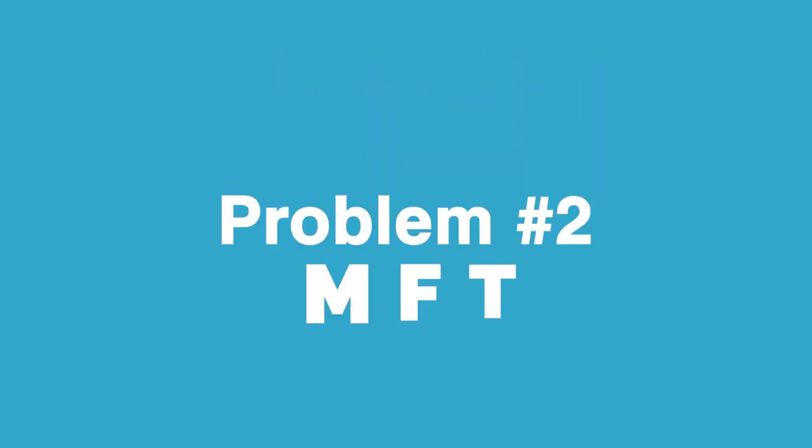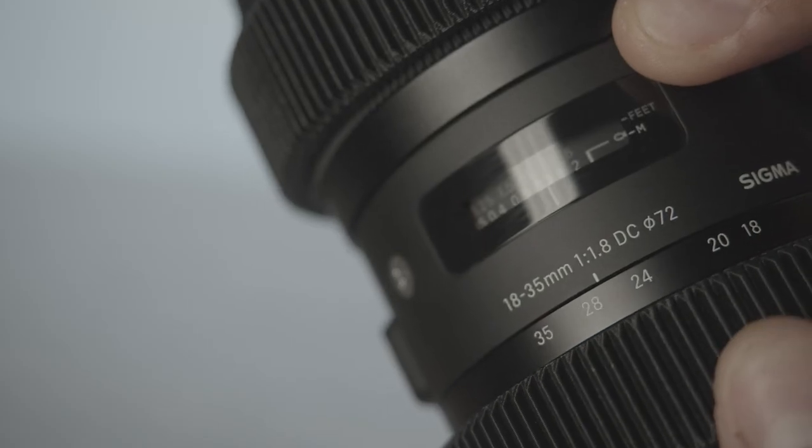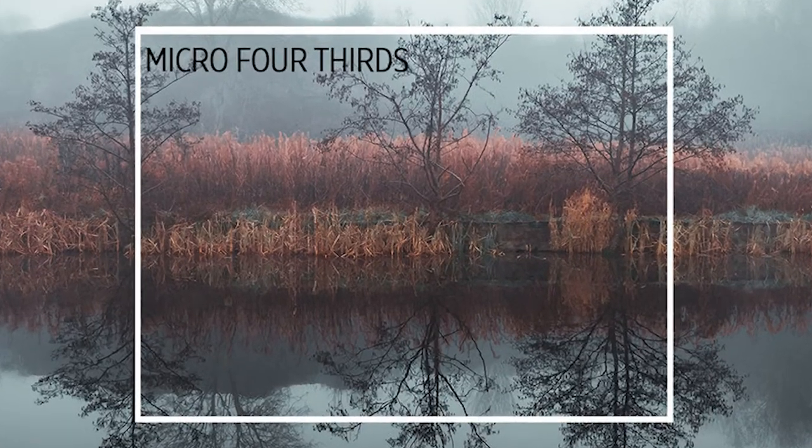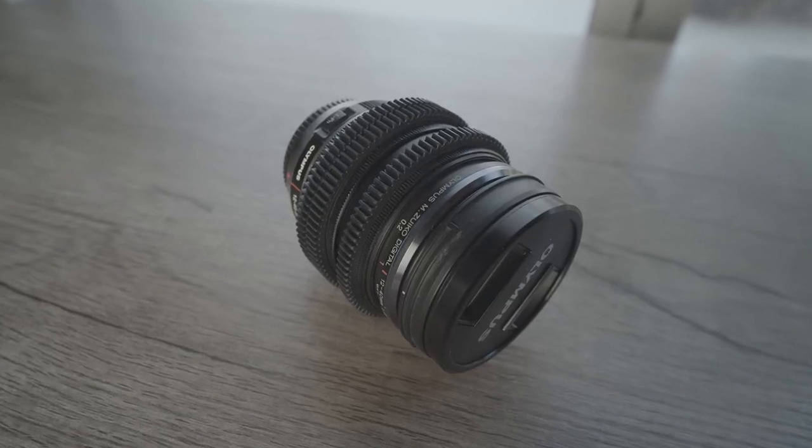The number two problem with Micro Four Thirds lenses is that the focal lengths aren't exactly accurate. Each lens has a focal length etched on the side, but each focal length is based on a full-frame sensor. Smaller sensors like Micro Four Thirds don't meet that measurement because the sensor only shows you a piece of what a full-frame sensor can show you, making the MFT camera look extremely zoomed in. Take the Olympus 12-40 lens — an amazing Micro Four Thirds lens — it's not actually going to give you the same look as a full-frame 12-40. You pretty much have to double your focal length, so your 12-40mm is actually a 24-80mm equivalent.